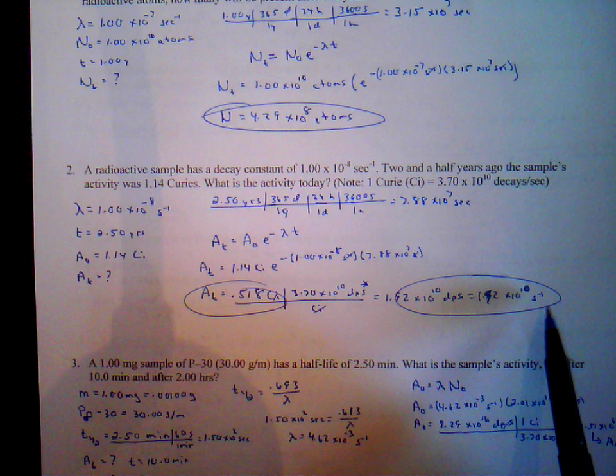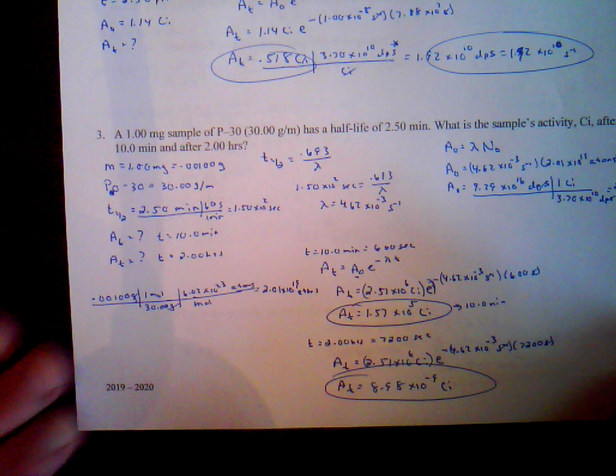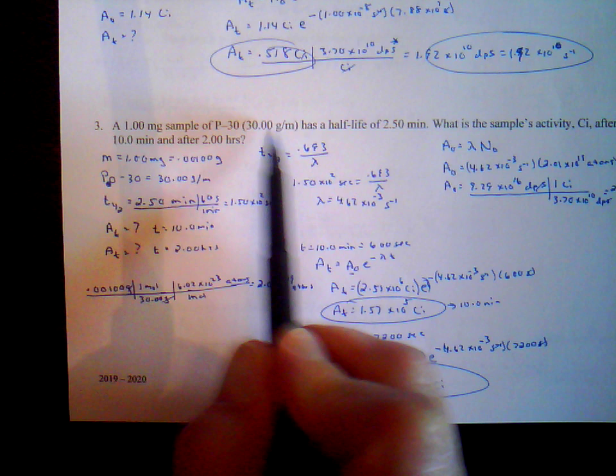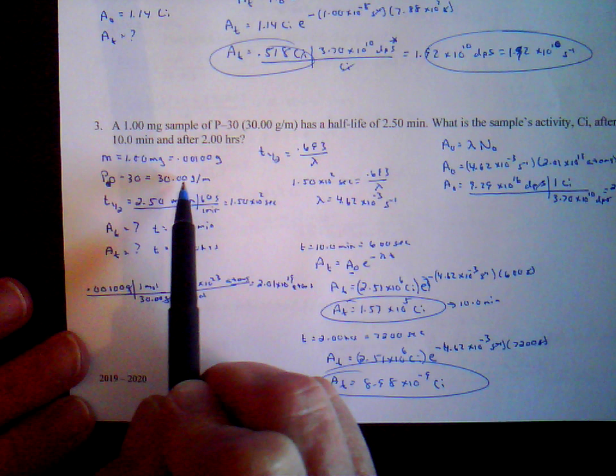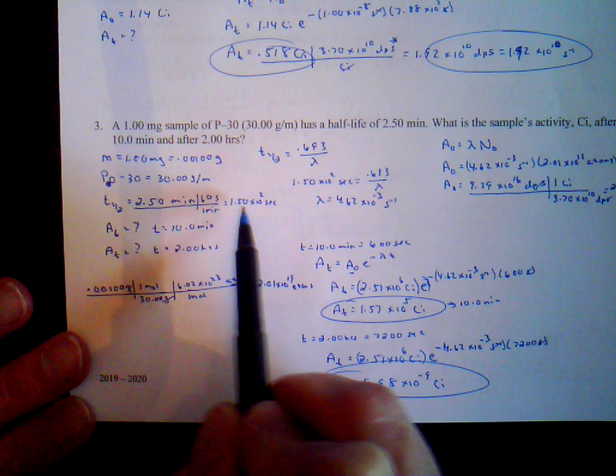Number 3 is a bit more interesting. We're given a mass of polonium-210: 30.0 grams. We know the molecular mass of polonium. The half-life is 2.50 minutes, which converts to 1.50 times 10 to the 2 seconds. We want to know the activity at 10 minutes and after two hours.